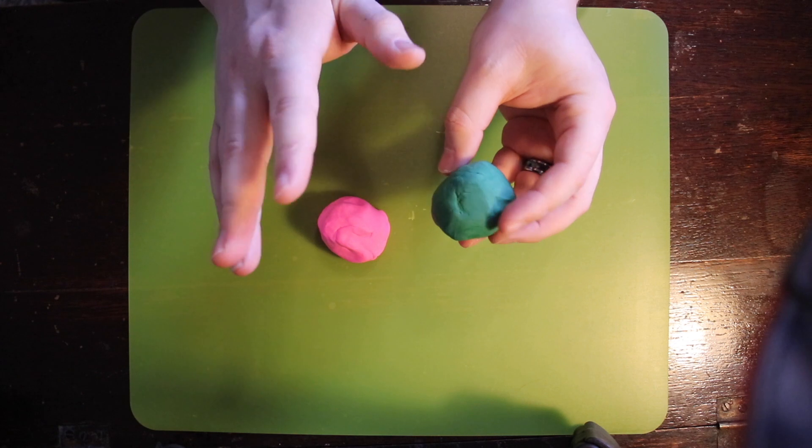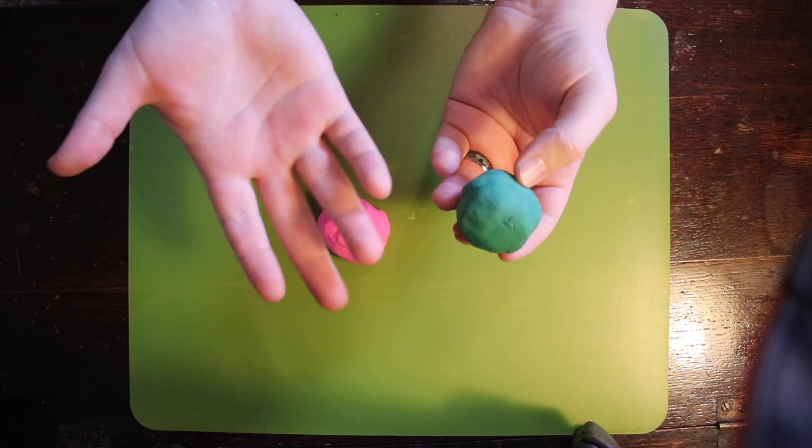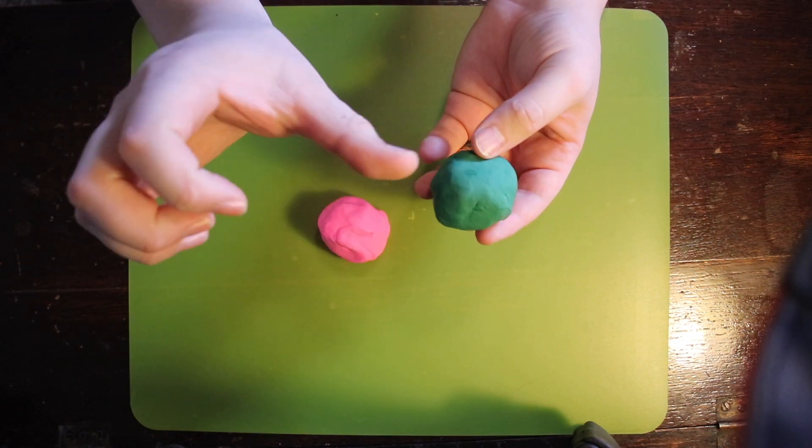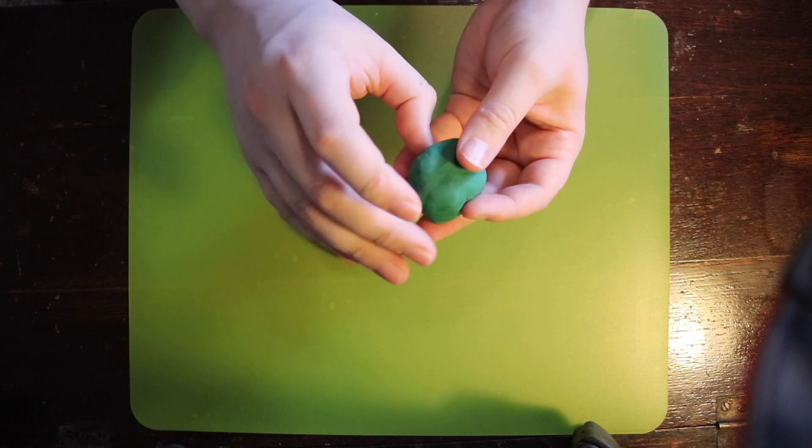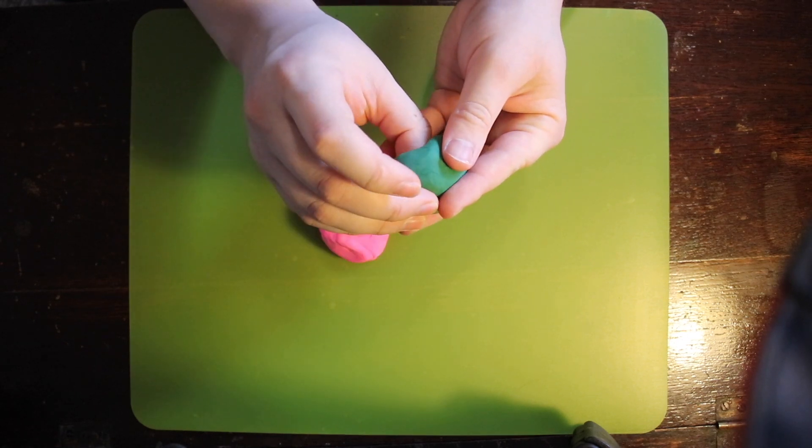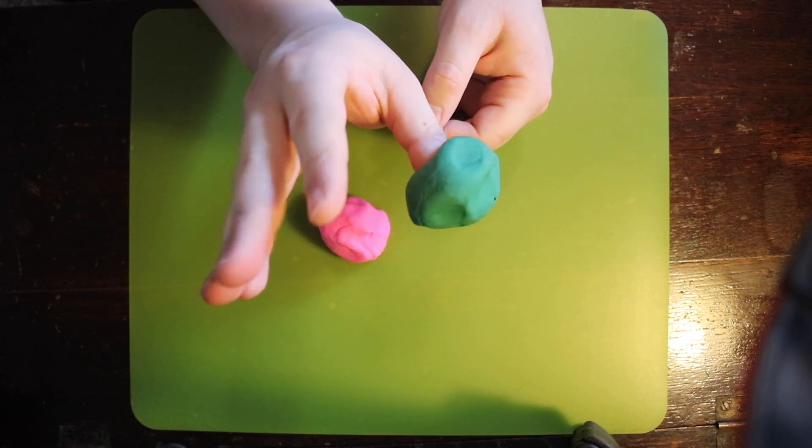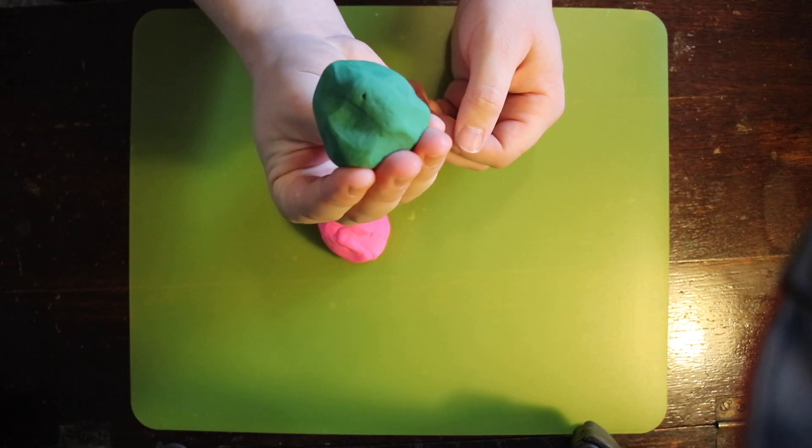So the technique that I like to use to make a pinch pot, I get my dominant hand, which is my right hand, I get my thumb, I'm going to stick it into my ball of clay. And then with my other four fingers, pinch.